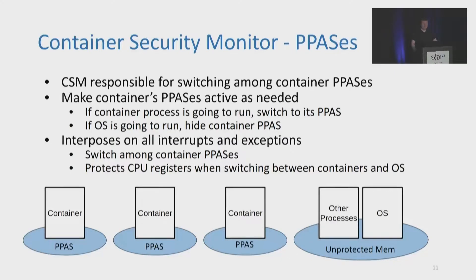One of the main functionalities of the CSM is supporting protected physical address spaces. In order to do this, it needs to be able to switch among them as the system runs. If a container process is about to run, the CSM needs to make that container's protected address space active. And similarly, if the OS is about to run after running a container, the CSM needs to hide that container's protected address space. To achieve this, the CSM interposes on all interrupts and exceptions so that it can identify what was running and what is to run next, allowing it to switch among the container-protected address spaces.